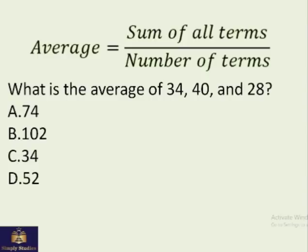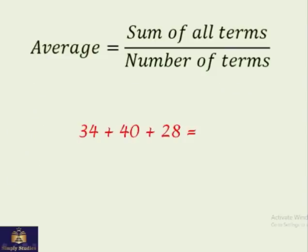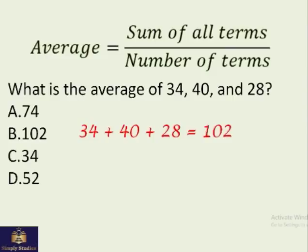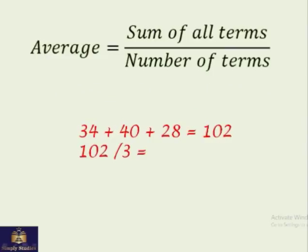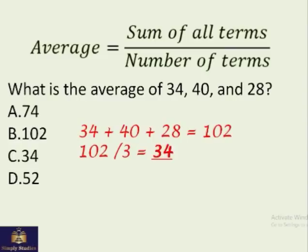For example, let's take a question. What's the average of 34, 40, and 28? So how many terms are there? Three. So we'll add these three and then divide it by how much? Three. Yes. So how much does it give you? 102 divided by 3 equals 34. That's your answer.